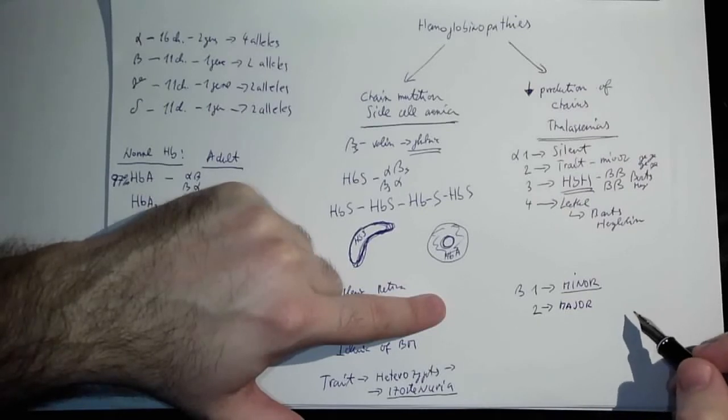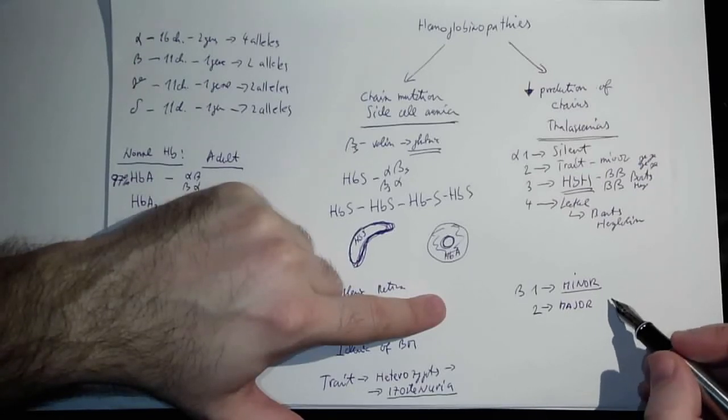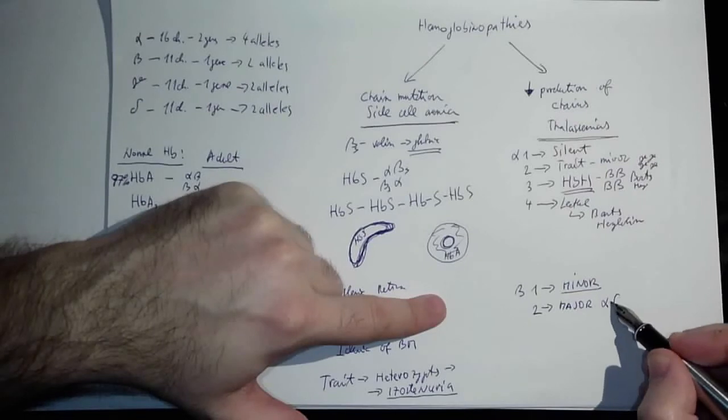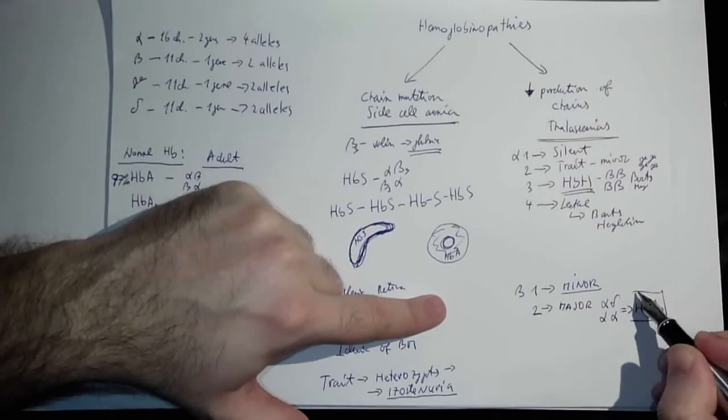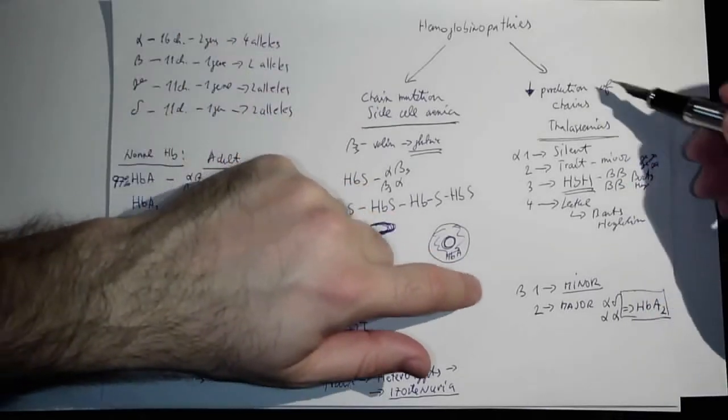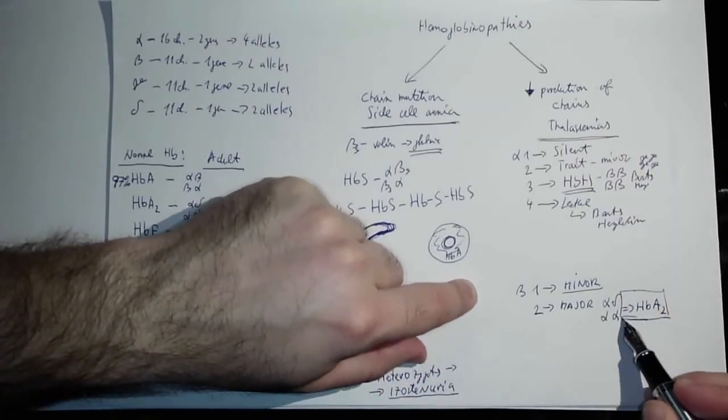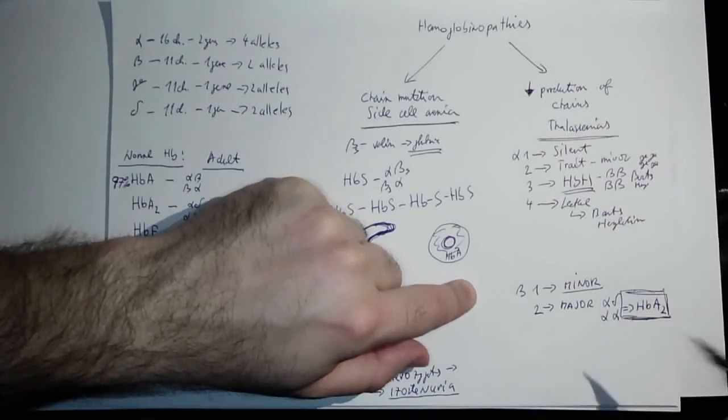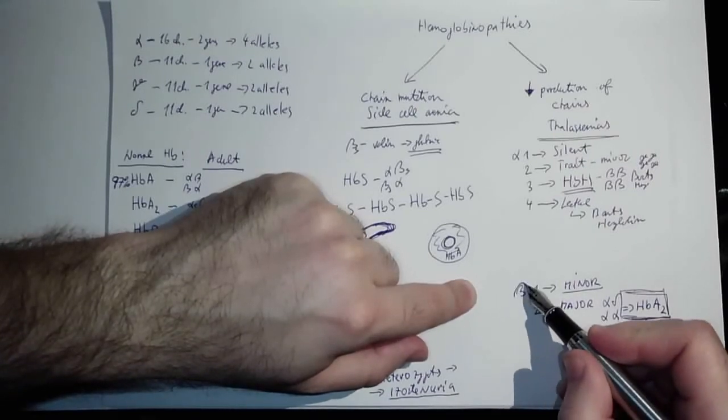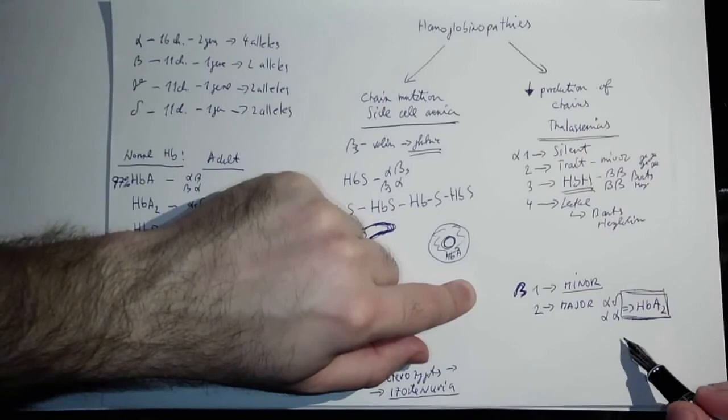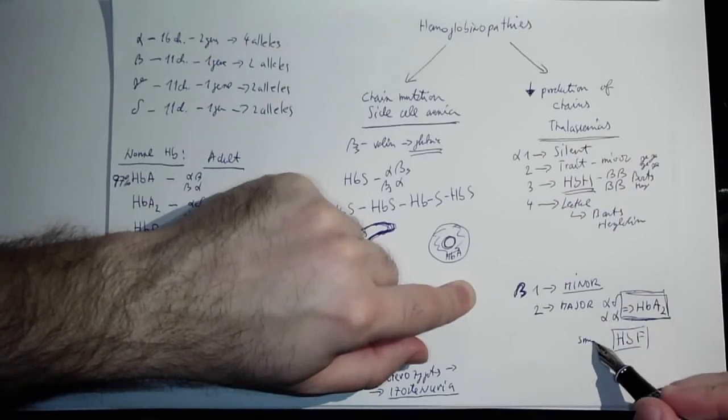In contrast to this, beta thalassemia major, which means there are no beta chains. In this case, the hemoglobin which really increases is the one without the beta chains, and typically it's the one with the delta chain, so it's hemoglobin A2. This is a hallmark actually. Basically, if someone—both of these are microcytic anemias. Typically, if you have a microcytic anemia and you check for hemoglobin A2 and it's increased, it could be very likely beta thalassemia. Not only this, but also in some cases small amounts of hemoglobin F can be produced as well.